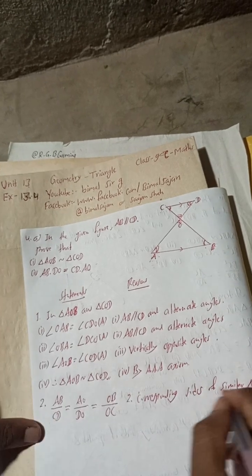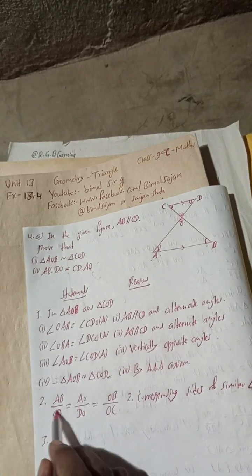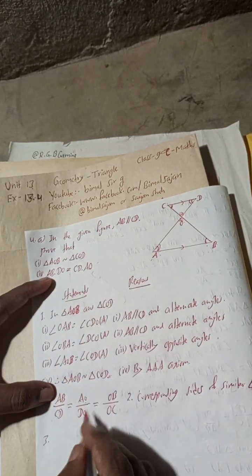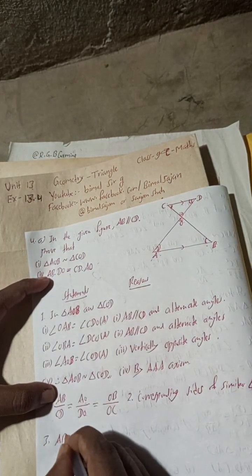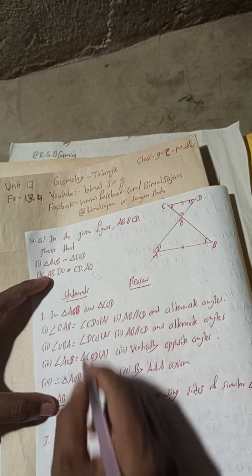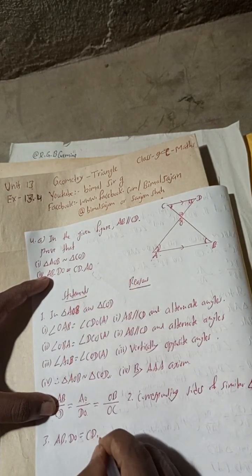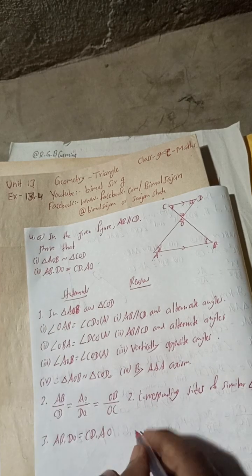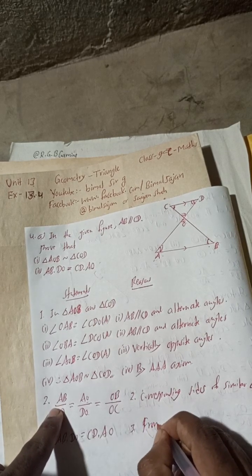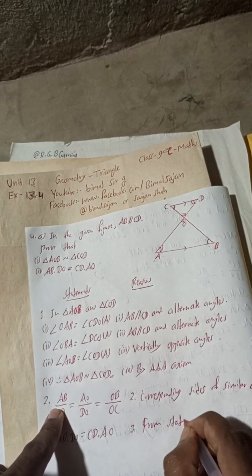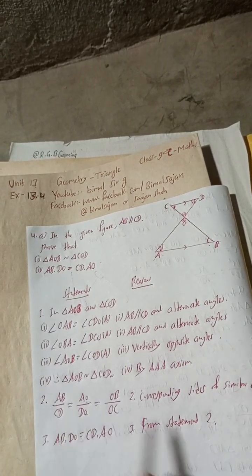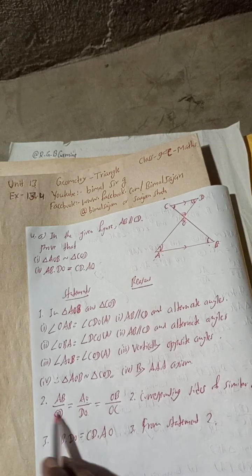From the first two ratios, we cross multiply: AB × DO = AO × CD. This is proved. Reason: from statement 2, using the first two ratios.